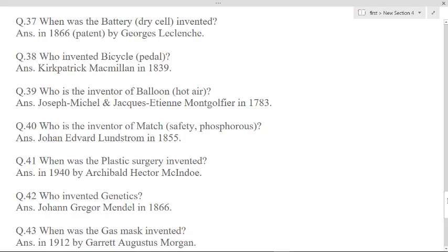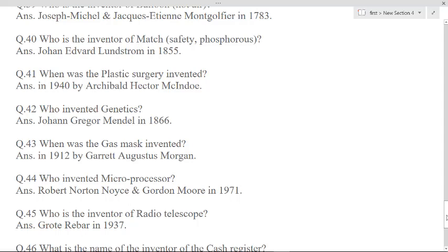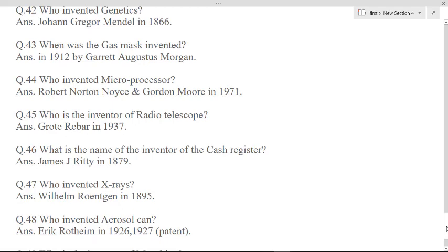When was the plastic surgery invented? In 1940 by Archibald Hector McIndoe. Who invented genetics? Johann Gregor Mendel in 1866. When was the gas mask invented? In 1912 by Garrett Augustus Morgan. Who invented microprocessor? Robert Norton Noyce and Gordon Moore in 1971.